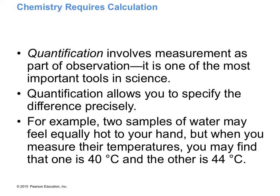Another term used is quantification versus qualification. Quantitative means you can give something a precise numerical value. Qualitative means you make a descriptive observation — like saying something is cold. Quantitatively, in lab, you'd use a thermometer and report the actual temperature in degrees Celsius or Fahrenheit.